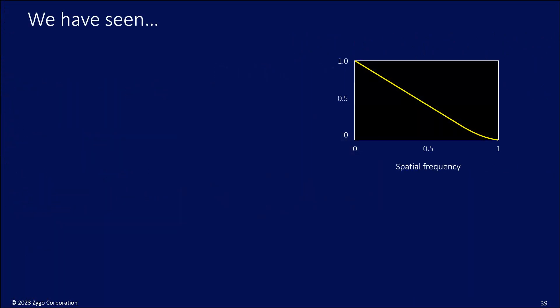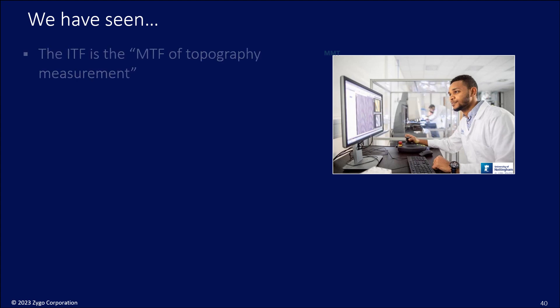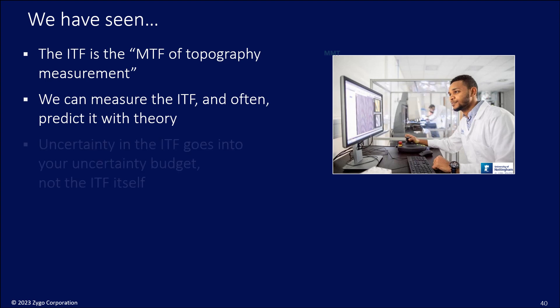So we've seen that the MTF quantifies imaging performance. However, the MTF error is the difference between the results and expectations. So the desired MTF is the one that is fit for purpose. And how well you get there tells you whether or not you've achieved your goal. For the instrument transfer function, which I described loosely as the MTF of topography measurement, we have similar observations. We can measure the ITF and often we can predict it with theory. And the uncertainty of the ITF is what goes into an uncertainty budget, not the ITF itself. I think this is perhaps the most salient point worth discussing amongst those of us that do surface topography measurement.